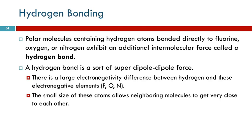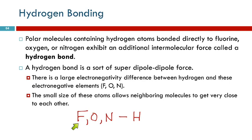To remember which substances have hydrogen bonding: have you seen E.T.? He says 'E.T. phone home.' F-O-N bonded to hydrogen — a polar molecule with fluorine, oxygen, or nitrogen directly bonded to hydrogen will have hydrogen bonding. The reason it's specifically F, O, and N is that these are the three most electronegative elements and they are also small, which allows molecules to get closer together and makes the force of attraction stronger.